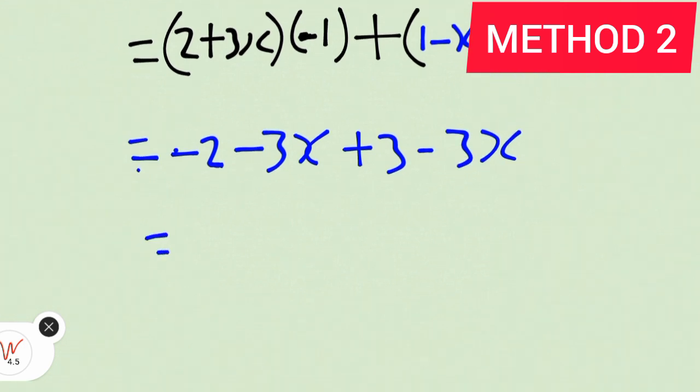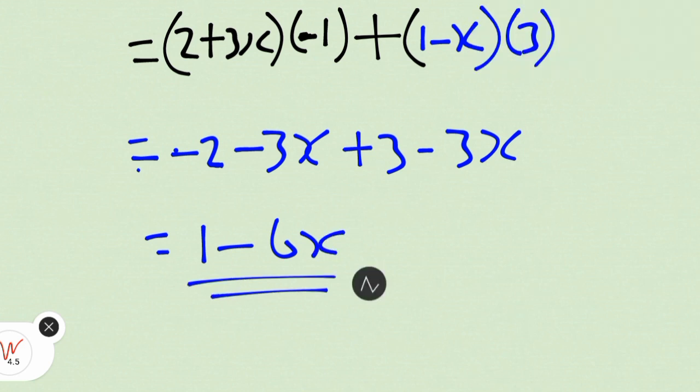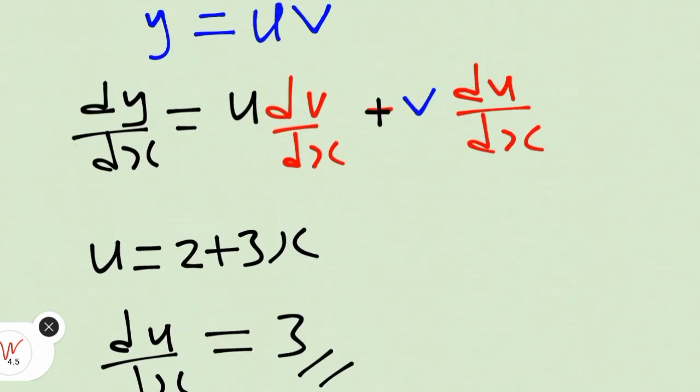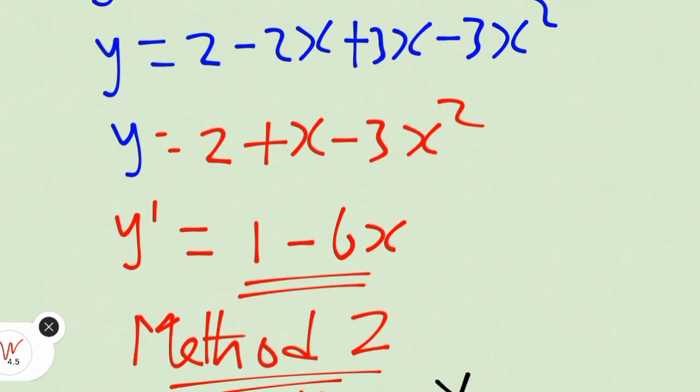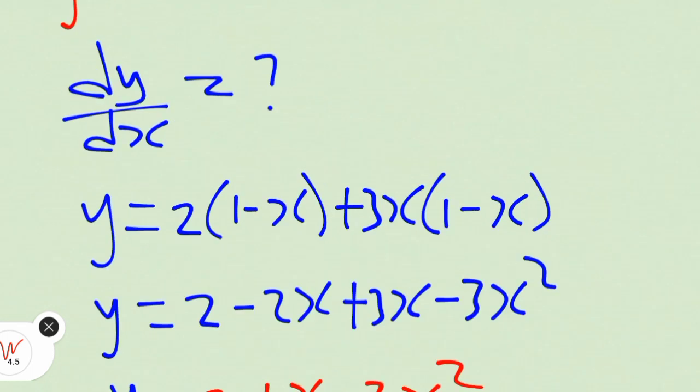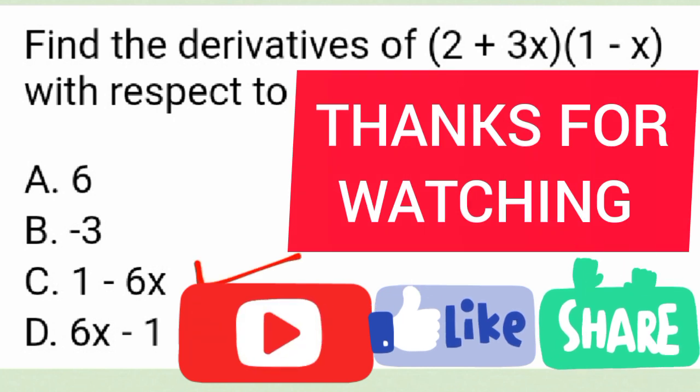Therefore we have minus 2 plus 3, we have 1. Minus 3x minus 3x, we have minus 6x. This is our answer: 1 - 6x for method 2, and for method 1 again, 1 - 6x. Then the correct answer is C: 1 - 6x. Thanks for watching.